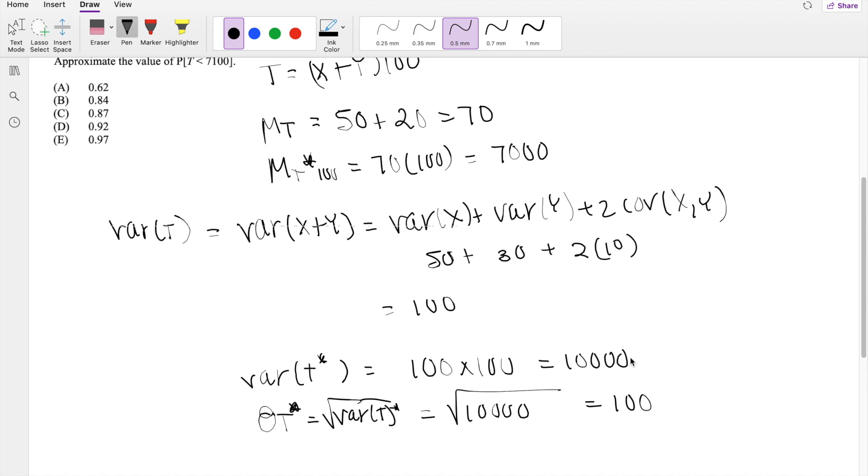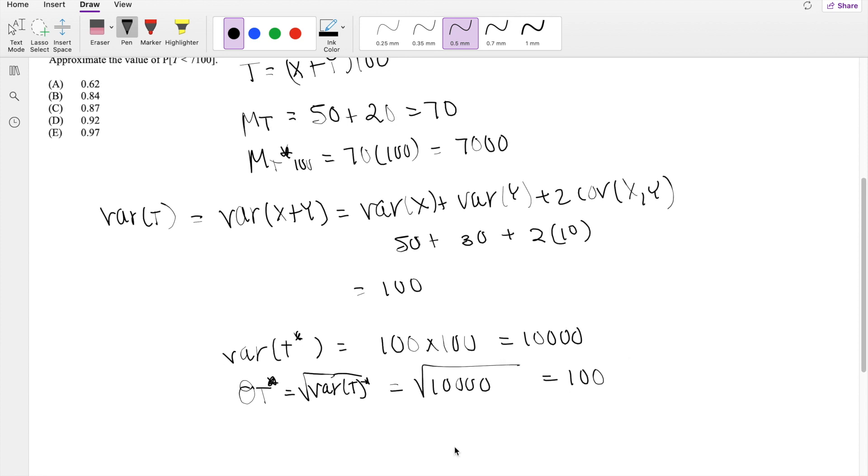All right, so I think we're ready to rock and roll. So the probability that T, technically this is T star in our definition, is less than 7,100 is equal to the probability, normalizing it, T star minus mean star divided by standard deviation star is less than 7,100 minus the mean, which is 7,000, divided by the standard deviation here, 100.